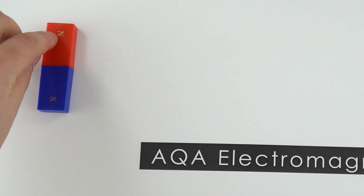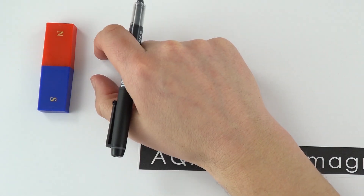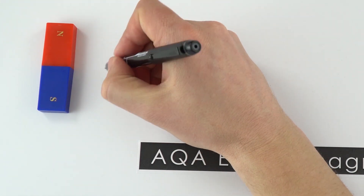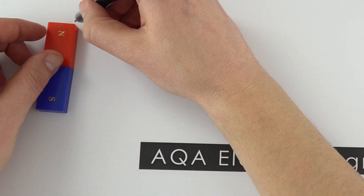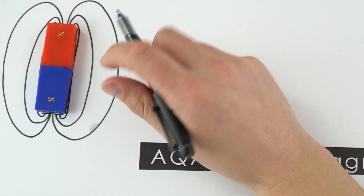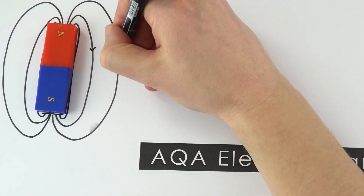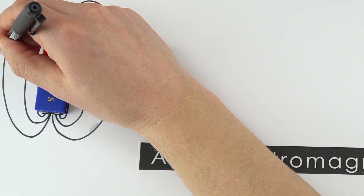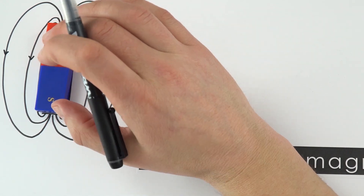For this magnet, the strongest field is going to be at the poles. We can actually plot this using a small plotting compass — when you put it on the table, you can see which way it lines up and then start to draw the field lines. The field lines look a bit like this; it's supposed to be symmetrical, and the field lines go from north to south. This is the magnetic field around a simple bar magnet.